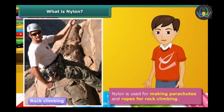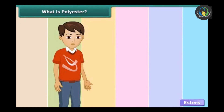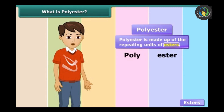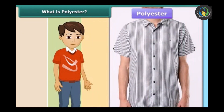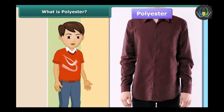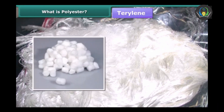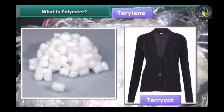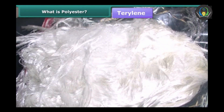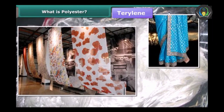The next fiber is polyester. What does the word polyester mean? Well, polyester is made up of two words: poly and ester. Many repeating units of ester chemical together is referred to as polyester. It is widely used to make shirts because it remains crisp and it is very easy to wash. It does not get wrinkled easily. Have you heard about the word terylene? Well, terylene is also a type of polyester. It can also be mixed with cotton to make terry cotton.